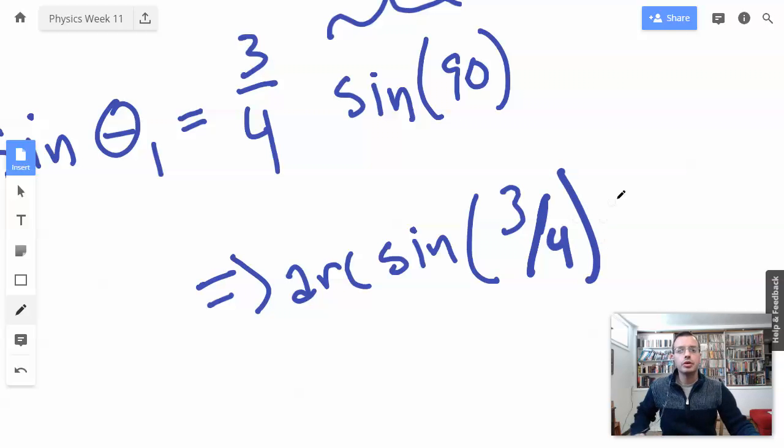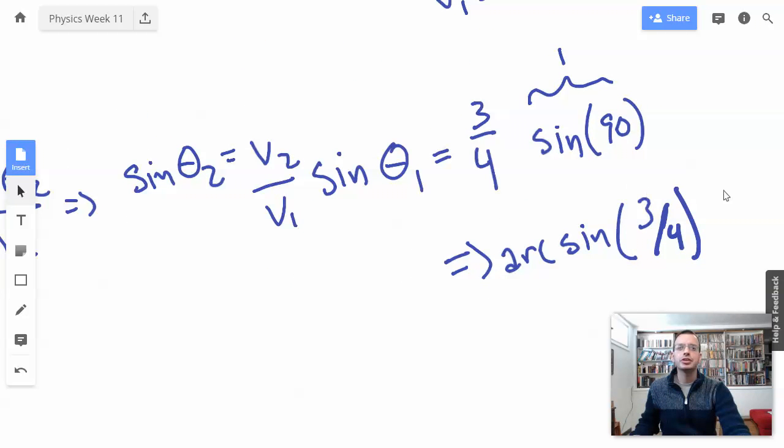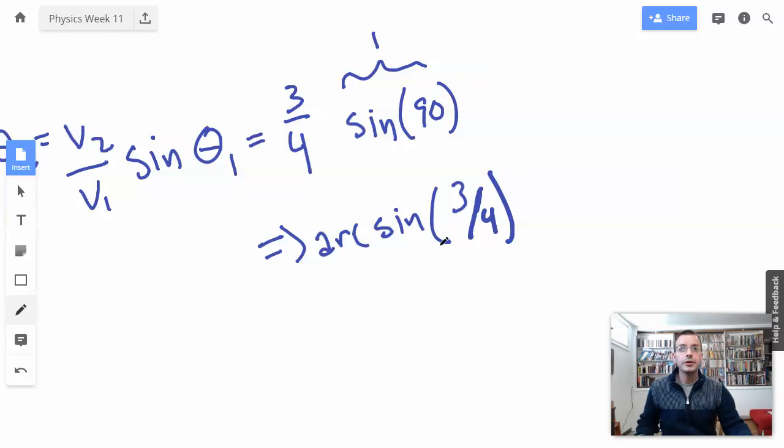3 fourths, there we go. And let's see, this guy is supposed to equal, what do we have here? Theta 2? Pretty sure it's theta 2. Arc sine of, yes, theta 2, success.